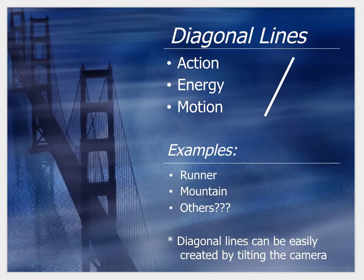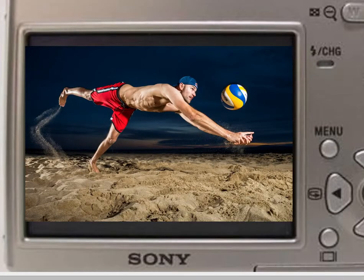Diagonal lines are like the opposite of horizontal lines — they give movement to a picture, life, and tell a story. In this photo, the downward diagonal of the arms gives a story of him falling into the sand to get the ball. It's a very intense, interaction-type photo.